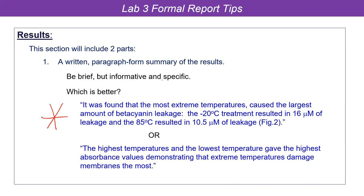The first example is better because of this word: specific. I'm not just saying 'highest' or 'lowest' — I'm actually saying minus 20 and 85 degrees. I'm being specific, saying at this temperature we had the most leakage, and I'm actually telling you exactly how much. Just saying 'a lot' or 'a whole bunch' doesn't really mean anything; everything is relative. But if you give me a precise number like 16 micromoles, I can compare 16 to 10.5. Notice it also refers to the figure. Overall, the written part of the results will be maybe half a page, plus the three actual graphs.